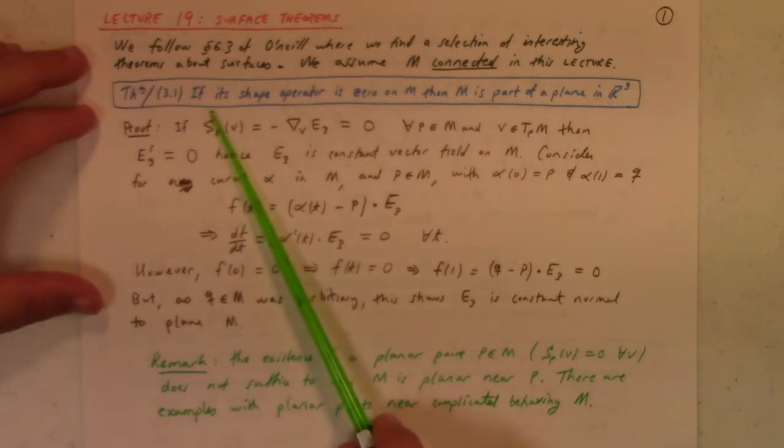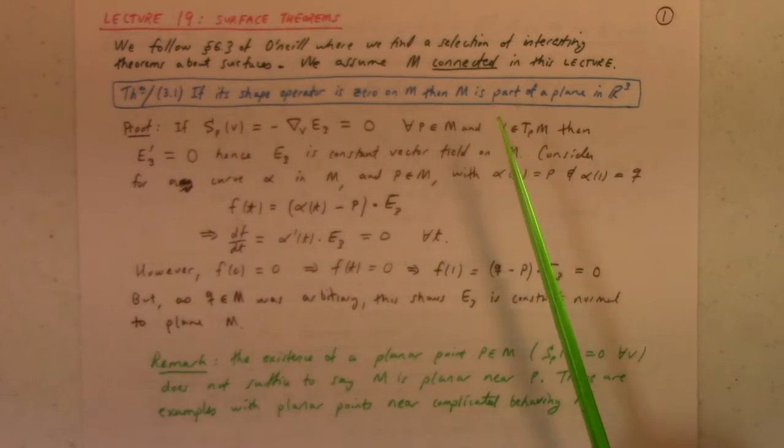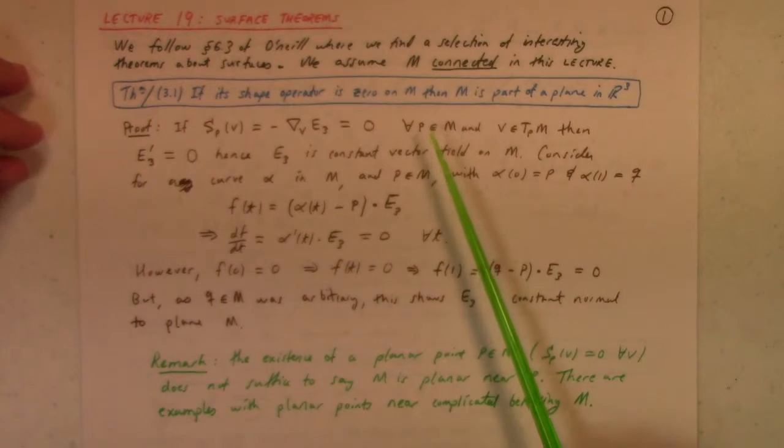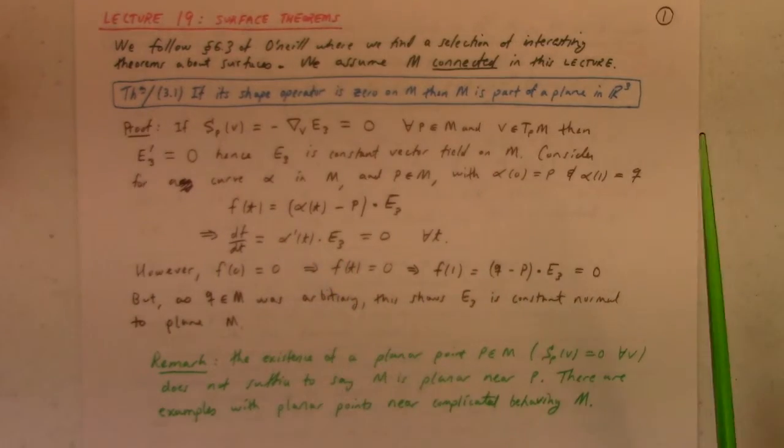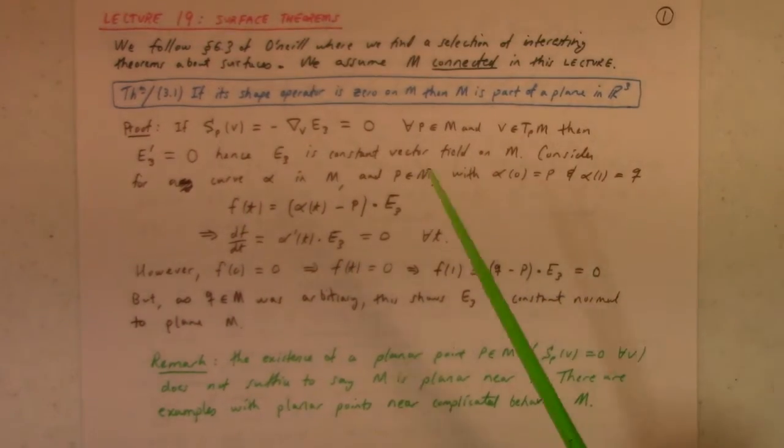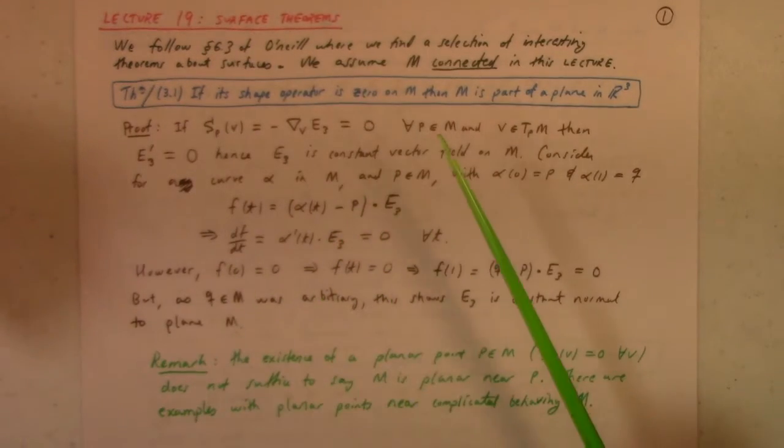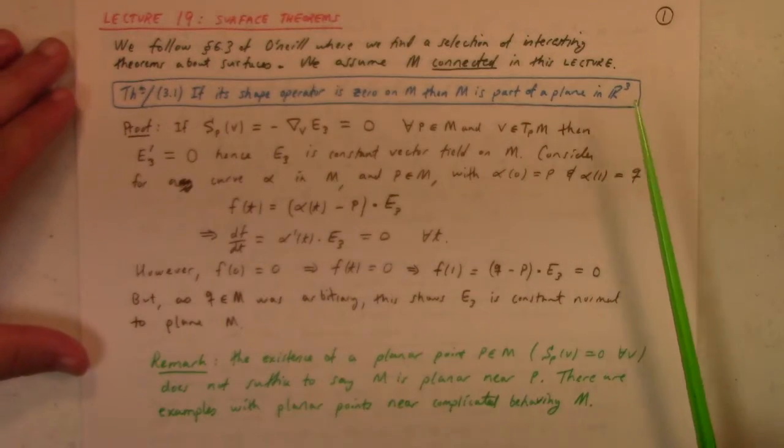If the shape operator is zero on the surface, then the surface is part of a plane. As is usually the case for most of these theorems, we invent some function, show its derivative is zero, and consequently, since m is connected and the function has derivative zero on a connected surface, it follows that the function is constant, and the function being constant gives us what we want. That's kind of the general construction that's used in a lot of these proofs.